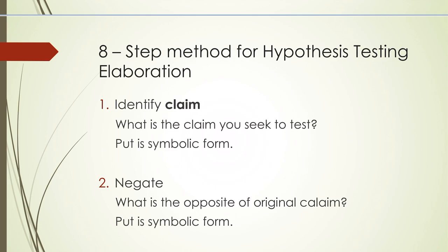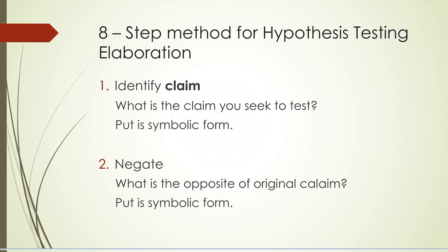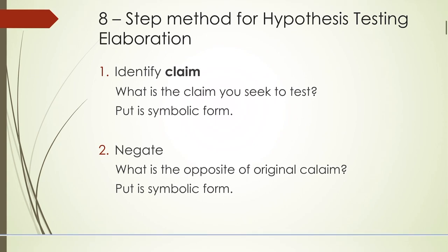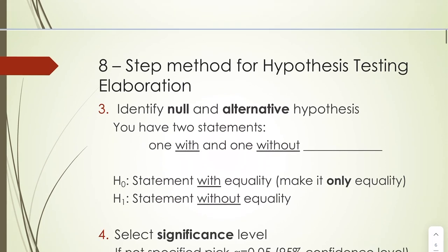Step one — identify the claim. What is the claim you're trying to validate? Put it in symbolic form. Step two — negate that claim. What is the opposite of the original claim? Put that in symbolic form too. Step three — identify null and alternative hypotheses. You have two statements: one and its negation. One of those is going to have an equality. Whichever statement has equality, put that as your H₀, your null hypothesis.